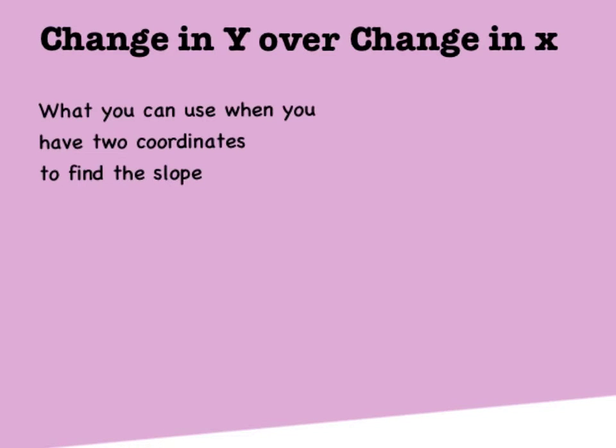Change in y over change in x is what you can use when you have two coordinates to find the slope.